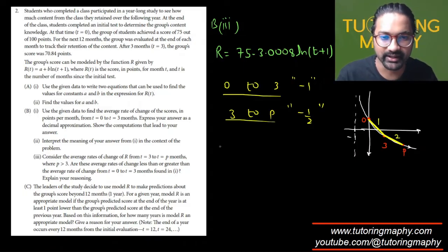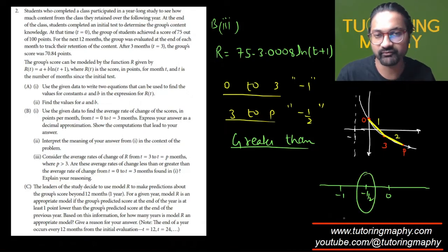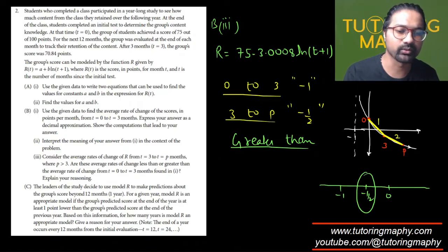What do you think is the greater value here? Because they are asking us to compare negative 1 and negative 1 over 2. And remember that there's a negative sign and hence this is going to be a bigger value. So if they're asking that the average rate of change from 3 to P is less than or greater than, we are going to say it's greater than. Because negative lesser number is a greater number. Because on the number line, if this is 0 and this is negative 1, negative 1 over 2 is here, which is obviously a greater number. So answer is greater than.